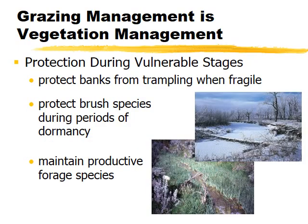We need to be cognizant of vegetation management during vulnerable stages for the stream. Sometimes we need to protect banks from trampling in early spring when they're inundated and compaction risk is high. We may also need to protect brushy species during winter dormancy because shrubs have high levels of vitamins, minerals, and protein, making them attractive to animals. The exact timing of vulnerability depends on the stream type.